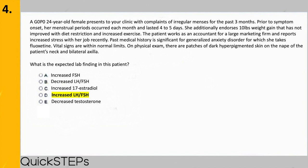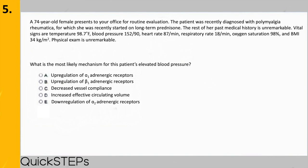Great job on that one. Question five: a 74-year-old female presents for routine evaluation. She was recently diagnosed with polymyalgia rheumatica and started on long-term prednisone. Vital signs include blood pressure of 152/90, heart rate 87, respiratory rate 18, oxygen saturation 98%, and BMI 34. Physical exam is unremarkable. What is the most likely mechanism for this patient's elevated blood pressure? A) upregulation of alpha-1 adrenergic receptors; B) upregulation of beta-1 adrenergic receptors; C) decreased vessel compliance; D) increased effective circulating volume; or E) downregulation of alpha-2 adrenergic receptors.